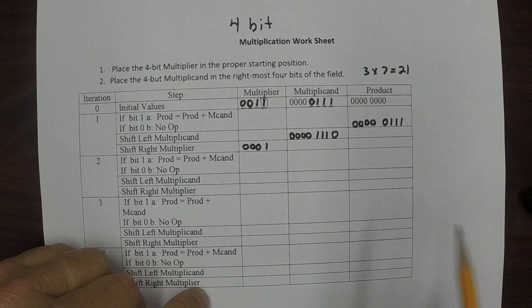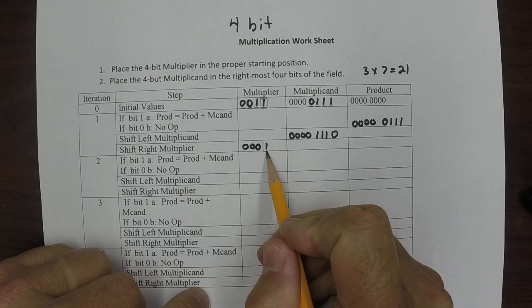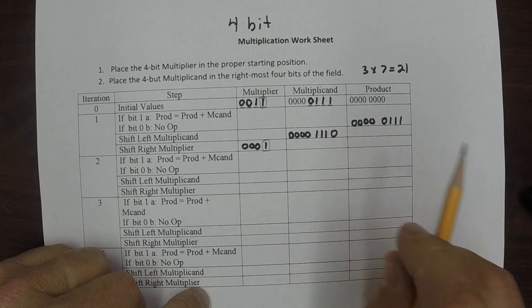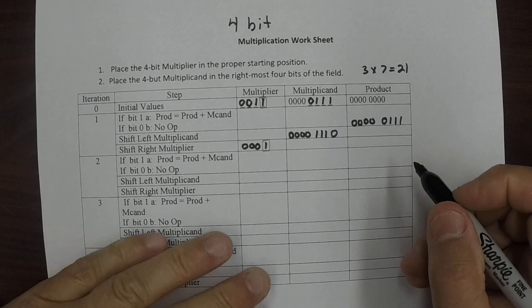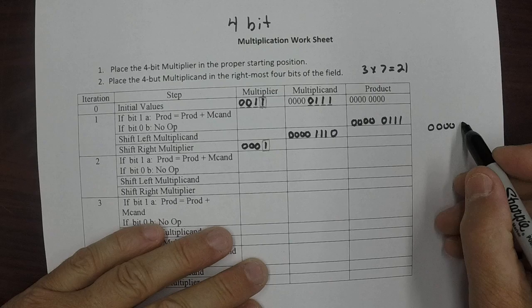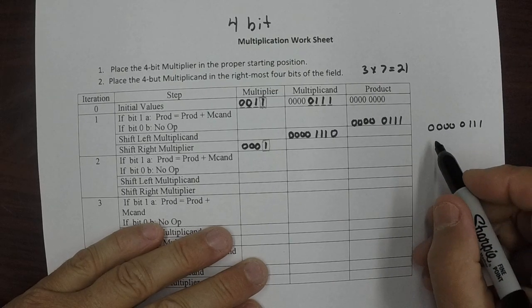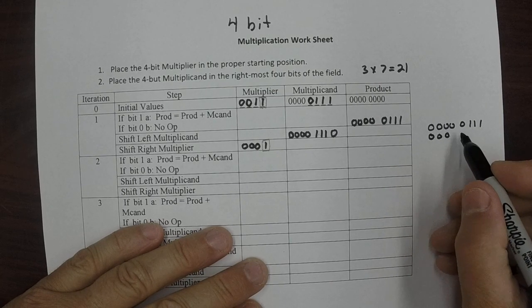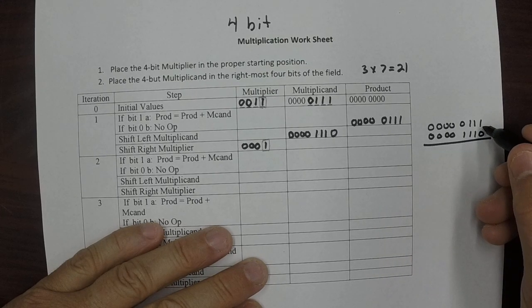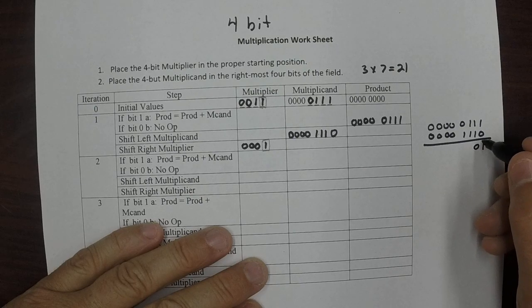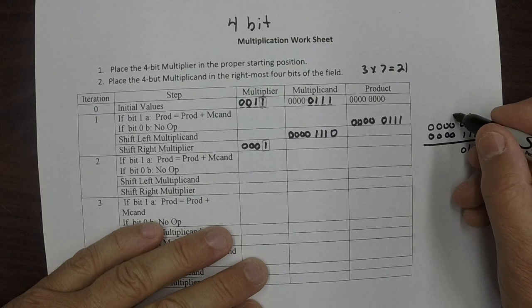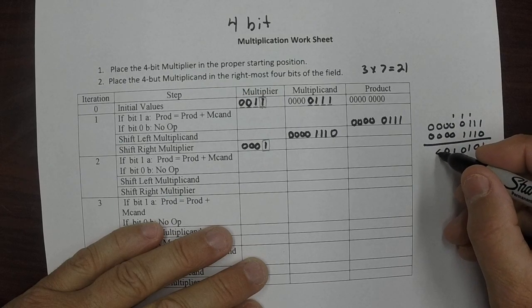Now we start the process over again. We examine this bit — it is a 1 — so we're going to add this value to that value. Let's work that out to the side: 0, 0, 1, 1, 1 plus 0, 1, 1, 1, 0. Adding that gives us 1, 0 — carry the 1 — that becomes 1, 0 — carry the 1 — and then the rest are zeros.